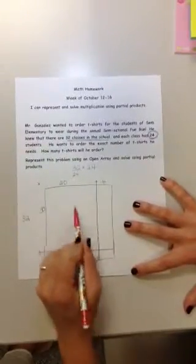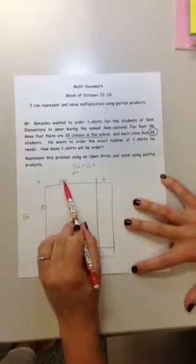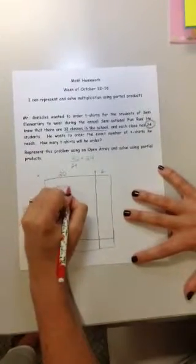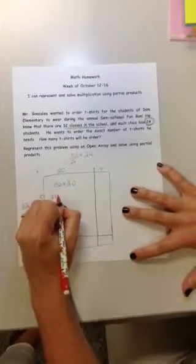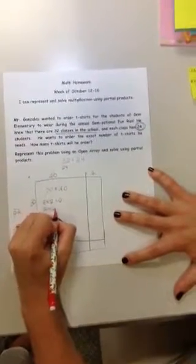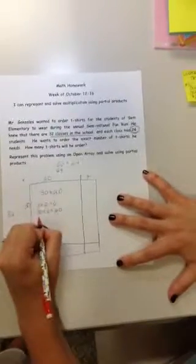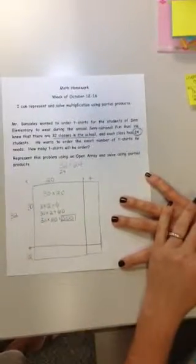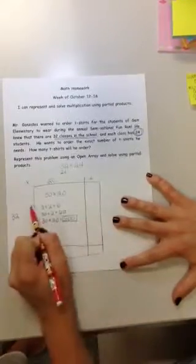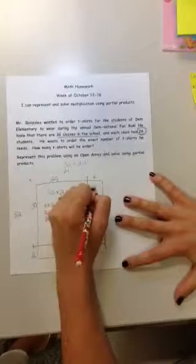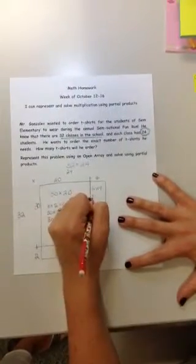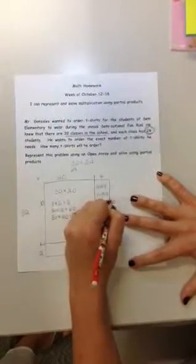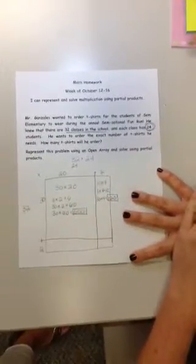So this big box right here, I'm going to start with that one. 30 is next to it and 20 is above it. So I know that this box is 30 units down and 20 units across, so this is 30 times 20. I know that 3 times 2 equals 6, so 30 times 2 will equal 60, and then I'm going to build up, 30 times 20 then is 600. That's my first partial product. Then the box next to it is 30 units down and 4 across, so that's 30 times 4. I know that 3 times 4 is 12, so 30 times 4 equals 120, my second partial product.